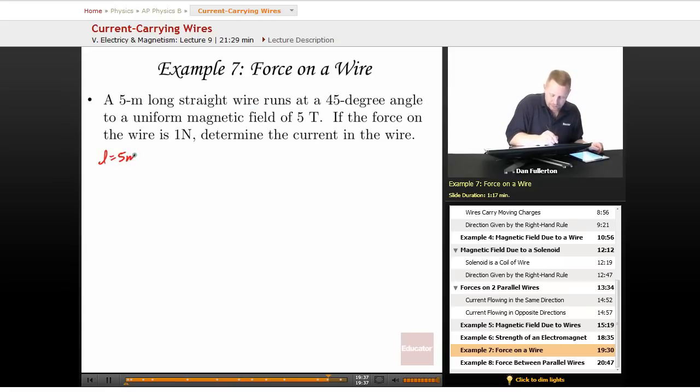so L equals 5 meters, which runs at a 45-degree angle, theta equals 45 degrees, to a uniform magnetic field of 5 tesla, B equals 5 tesla. If the force on the wire is 1 newton, F is 1 newton, find the current I in the wire.